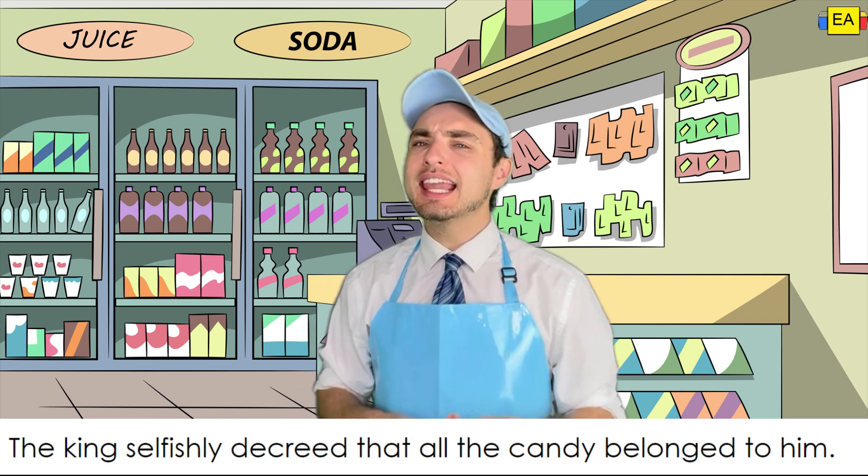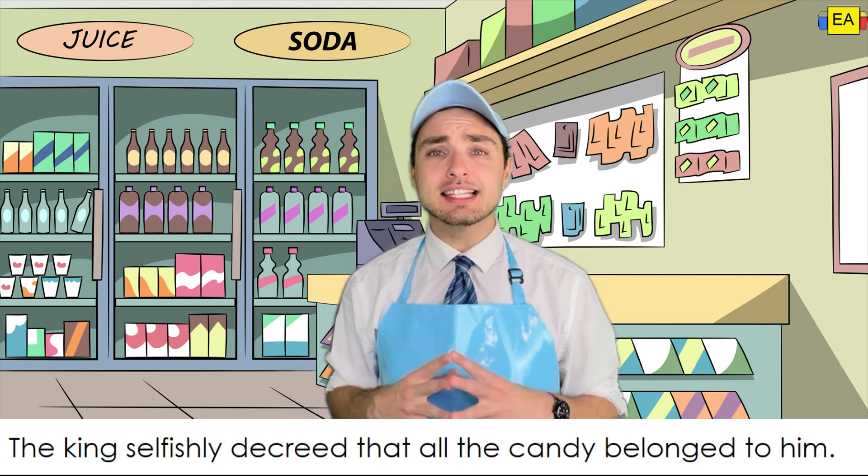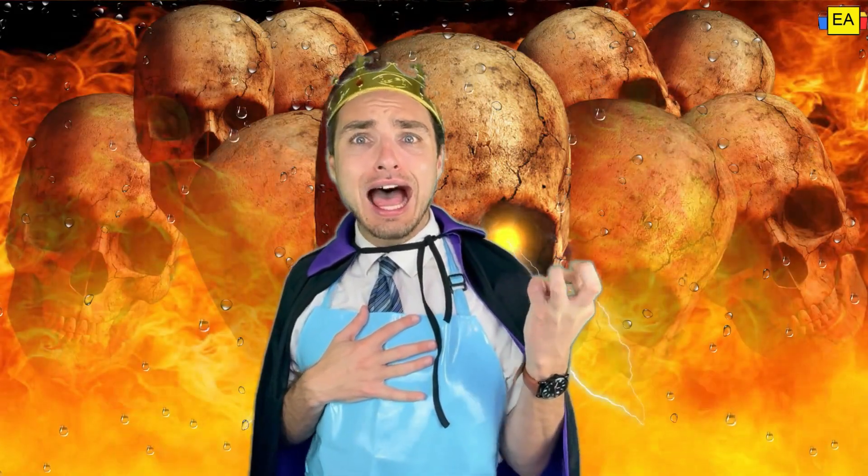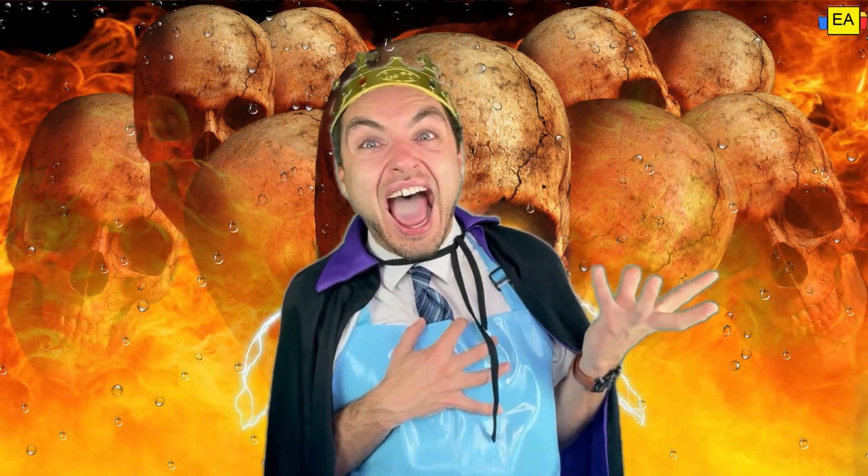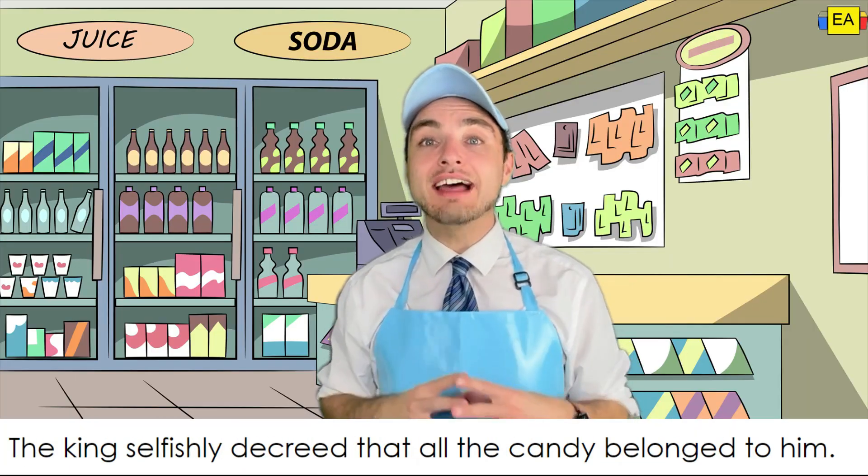Example. The king selfishly decreed that all the candy belonged to him. And yes, peasants, you shall see that your licorice, milk chocolate, dark chocolate, and sour candy all belong to me in my newest decree. They shall call me the evil king of candy. They'll call me the lollipop lunatic. Origin story.